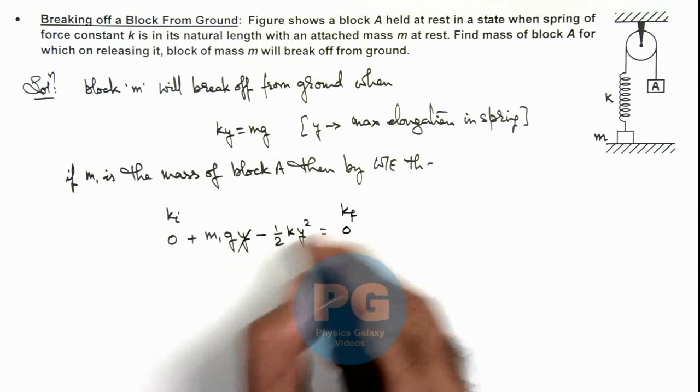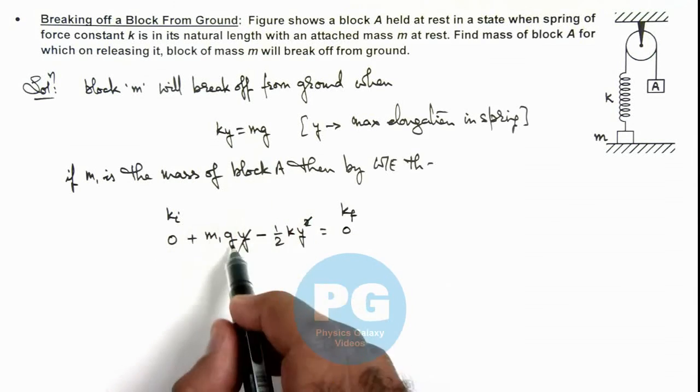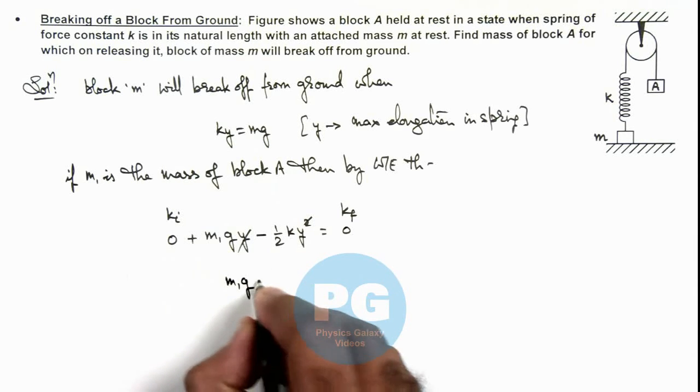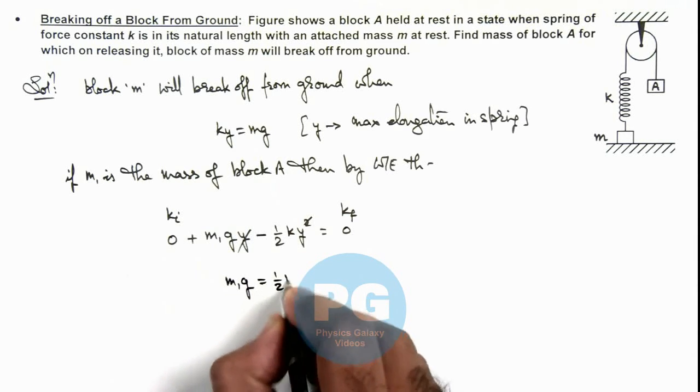So here y gets cancelled out and the value of k y we can write as m g. So this gives us m1 g is equal to half m g.